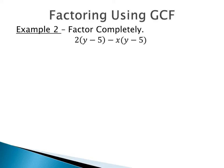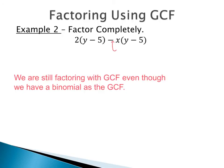For our next problem we're still finding the greatest common factor to factor completely. This one looks different: we have 2 times the quantity y minus 5, minus x times the quantity y minus 5. The subtraction in the middle means it's not fully factored, but our greatest common factor here is actually a binomial. Looking on either side of the subtraction, both parts contain the factor y minus 5.